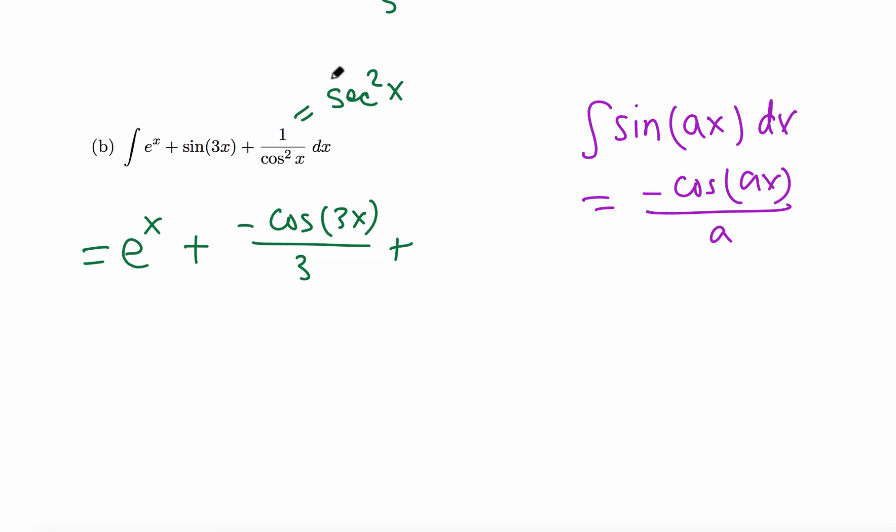Now we know that the antiderivative of secant squared, because the derivative of tangent is secant squared, the antiderivative of secant squared is just tangent.